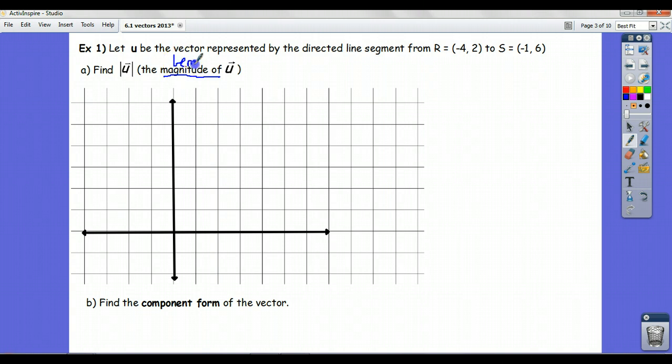Now be very careful with notation in these problems. See how r and s don't have the pointy brackets? That means they're points, not vectors. The vector is described in terms of those points. So r is (-4, 2). We'll graph that at negative 4, 2.